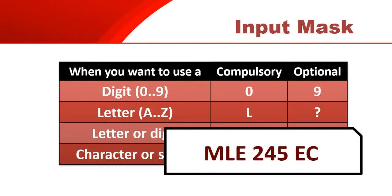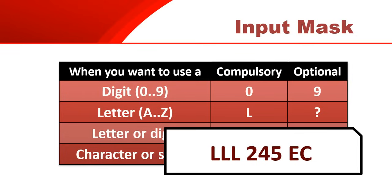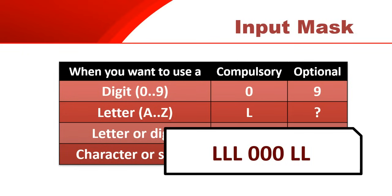For an input mask for all generic license plate numbers, we always start with three compulsory letters, so we use three L's. This is followed by three compulsory digits - it's always three - so we put three zeros. And this is followed by two compulsory letters, so we put two L's at the end. The input mask for a South African car registration plate is LLL000LL.